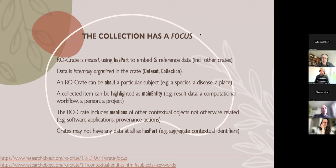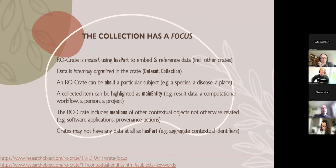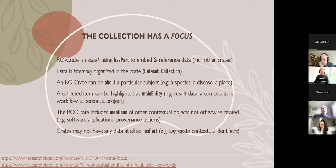In a collection, you can have different kinds of focus, and typically there are some objects in there that are more important. The most basic thing is just using hasPart — flat collections of things, although it could be nested or even through other crates. You can indicate a particular subject or context of a crate using 'about', which would be a topic — it could be a species, or whatever is the identifier for the thing that this RO-Crate is about. This is typically a real-world object, so it's not something you can download.